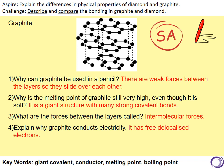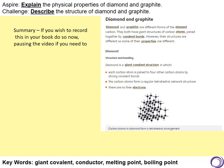Graphite conducts electricity because it has free delocalised electrons. Okay, that concludes today's lesson. If you would like to make some more notes in your book, there is a summary on the following slides. Pause the video and make notes as you need to.